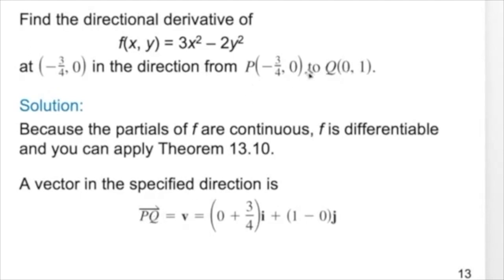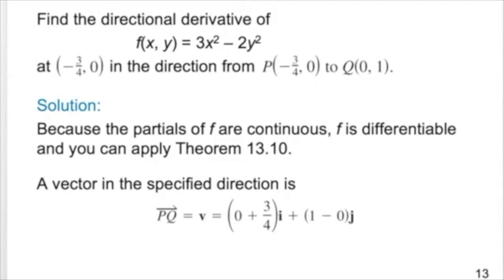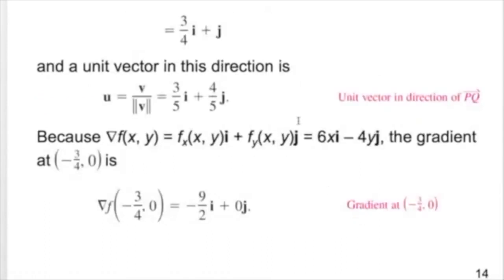The vector is calculated as Q minus P. The first component is 0 minus (−3/4), which gives 3/4, and the second component is 1 minus 0, which gives 1. So the vector PQ is (3/4)·i + 1·j.